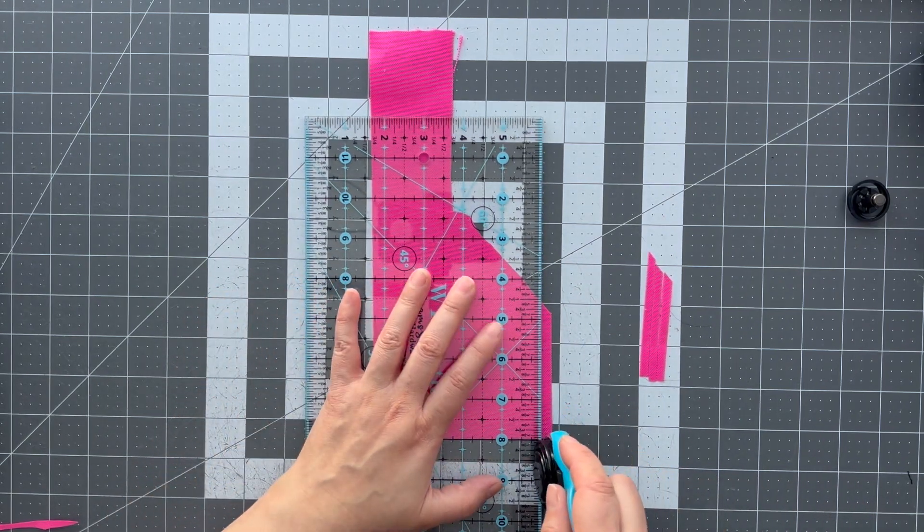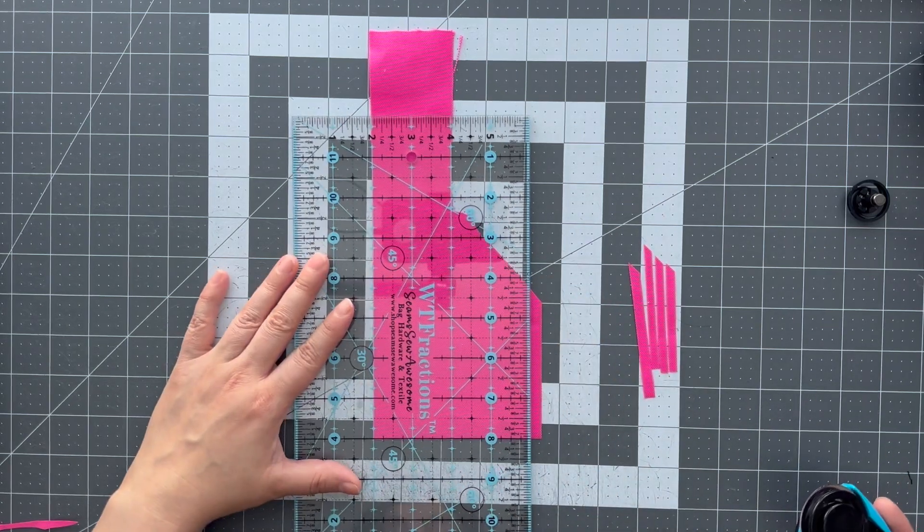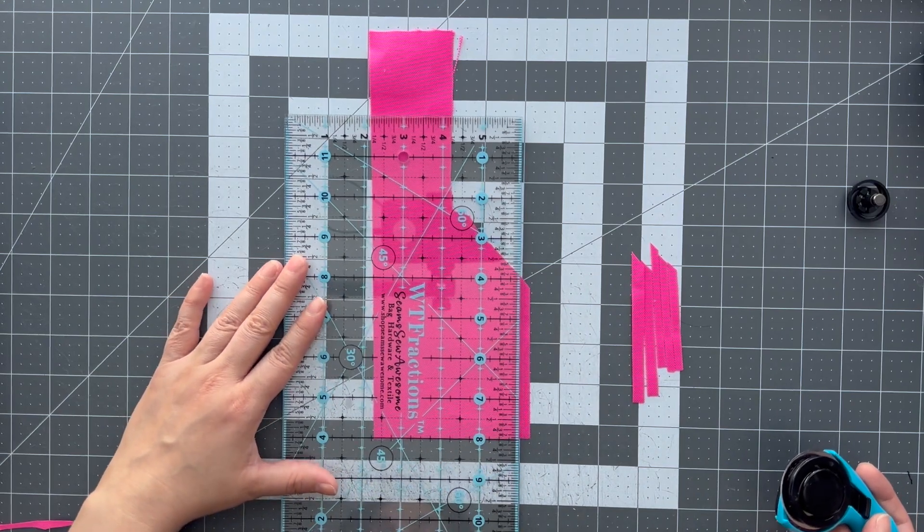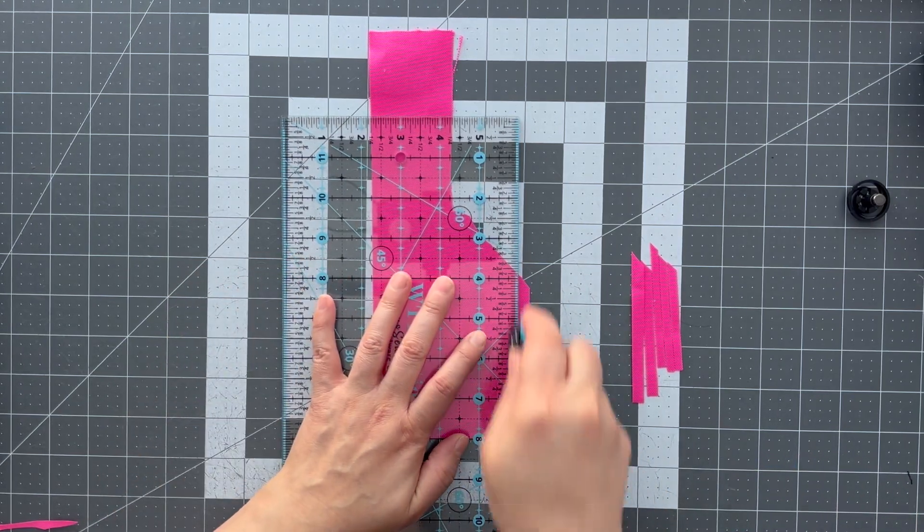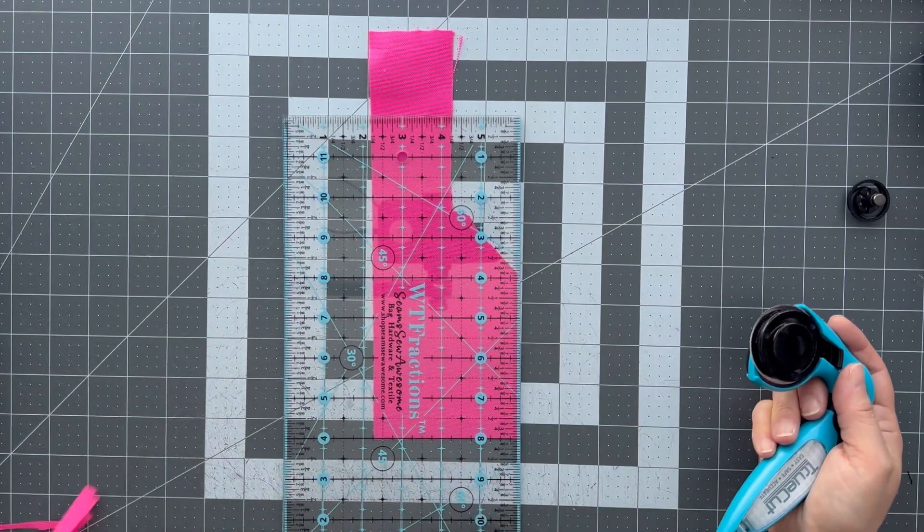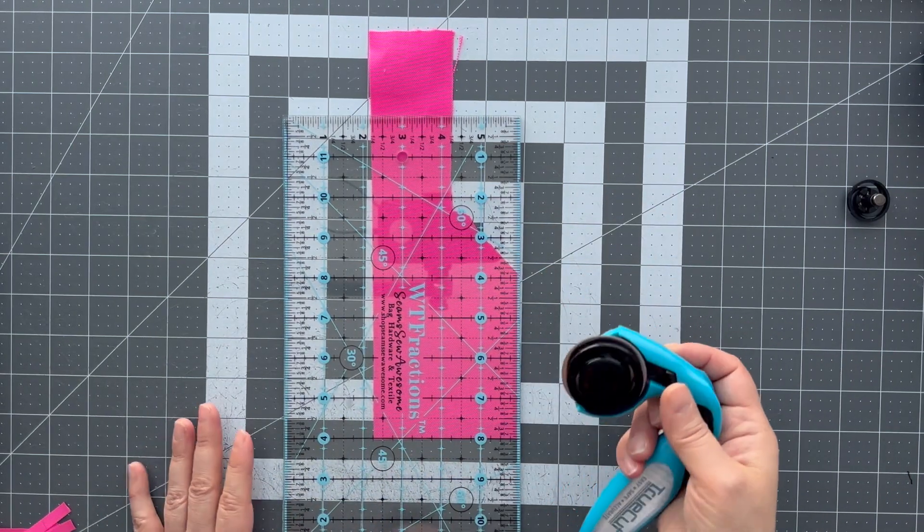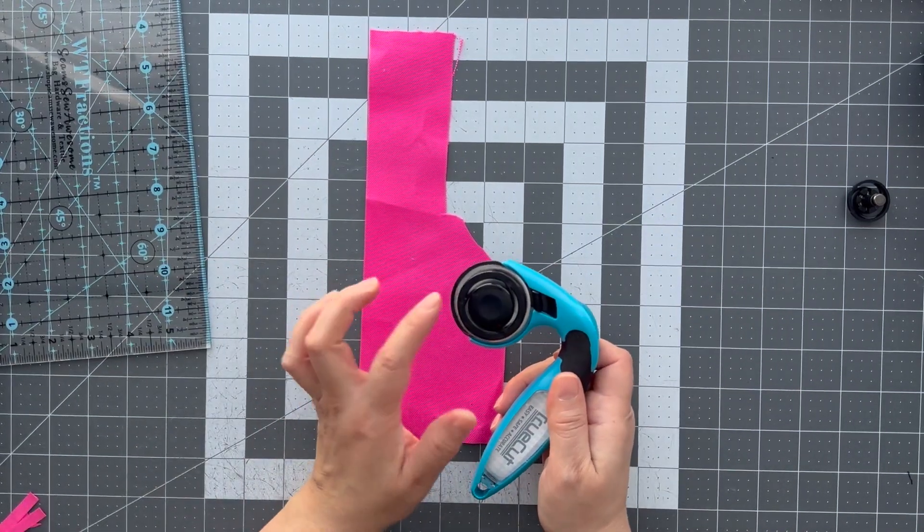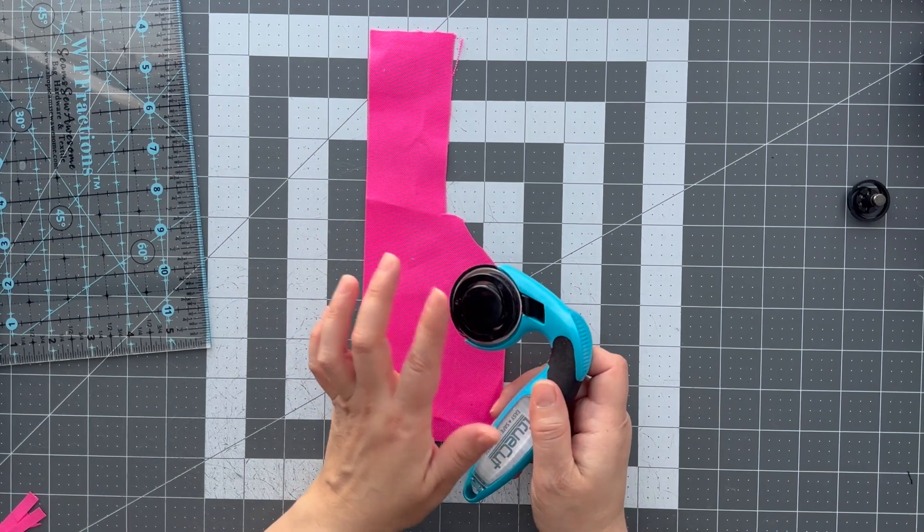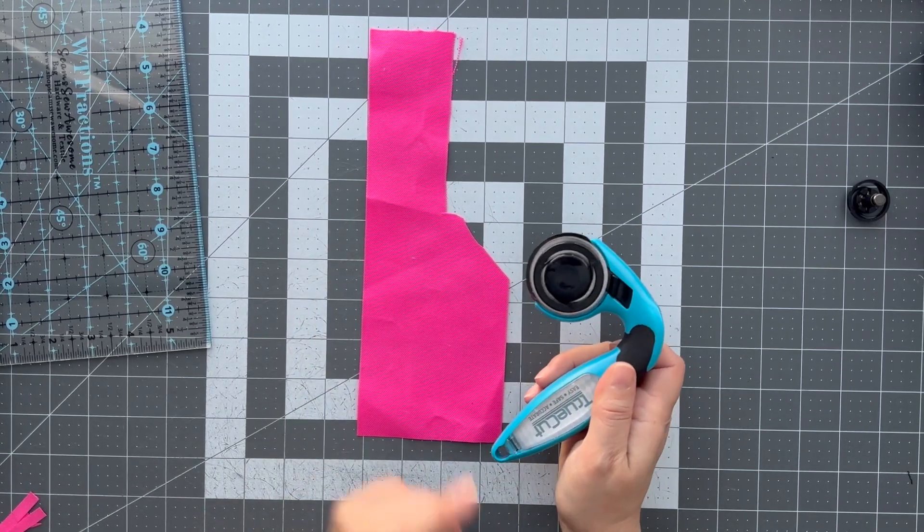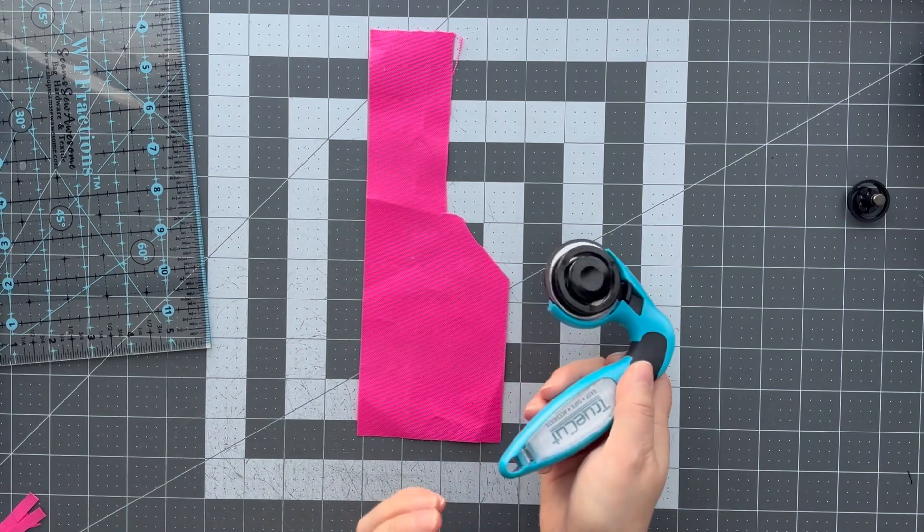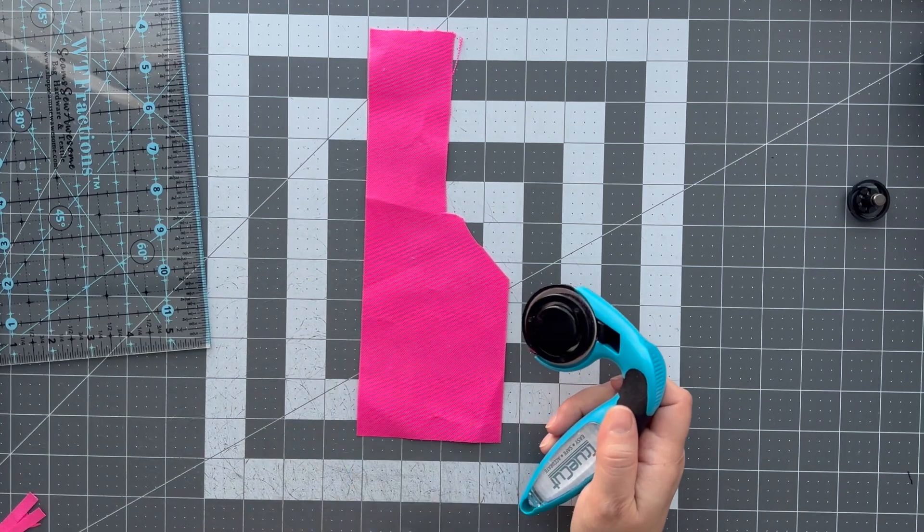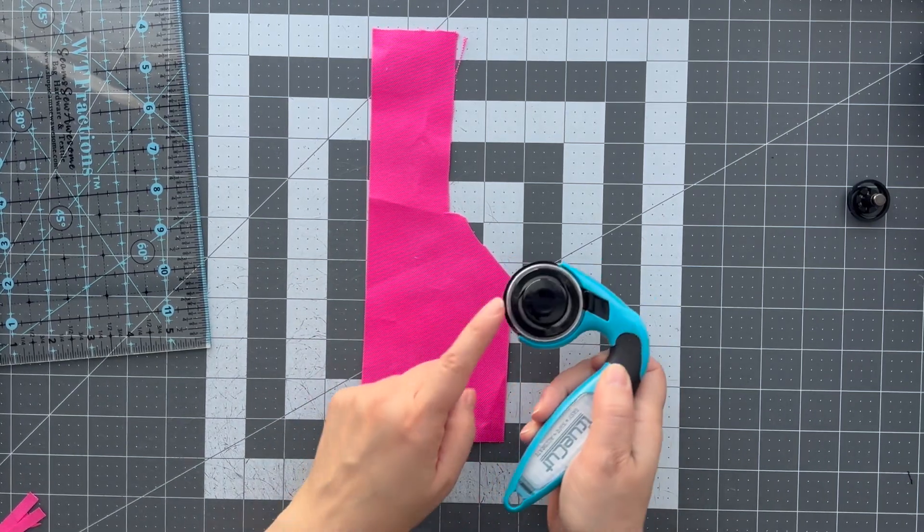It glides along really smoothly. I can cut pretty quickly without fear of not following a straight line. I think I'm going to use this ruler guide like forever. I'm probably never going to take it off. Here's the only issue I have with the guide.